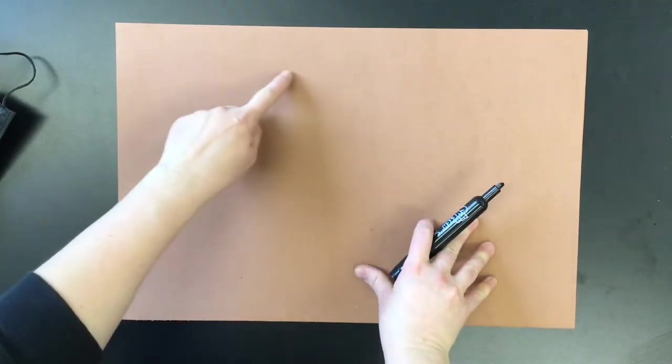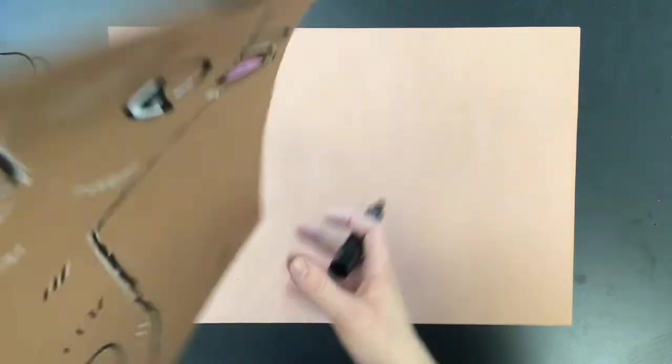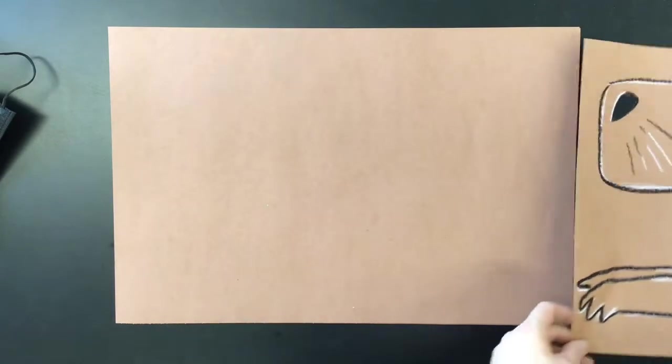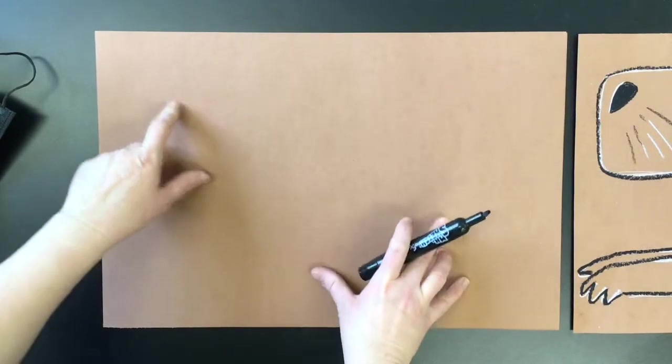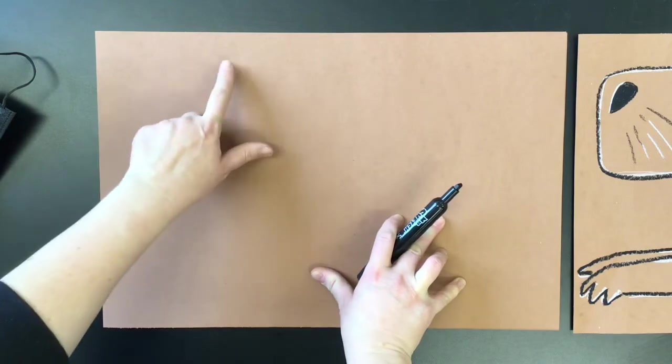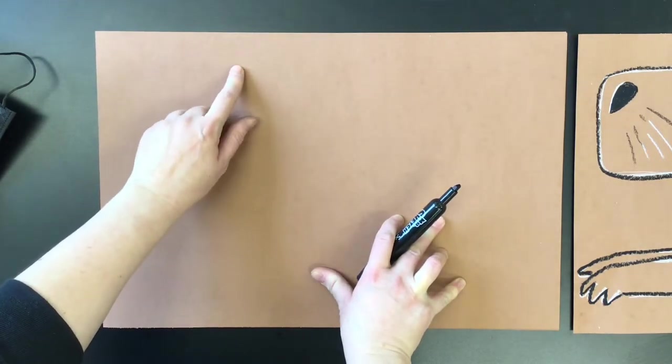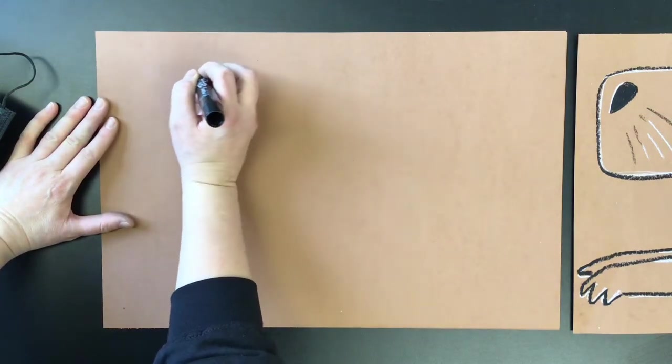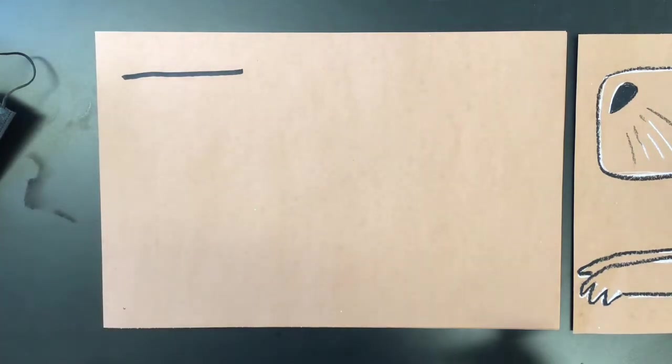We're going to start with the head of our capybara, which is essentially a rounded rectangle that just doesn't connect all the way. So I'm going to start up here in the top left corner, scooch in a little bit maybe like a hand's length, and then draw a horizontal line almost to the edge of my paper. It's okay if it's a little bumpy and imperfect. Don't even worry about it.